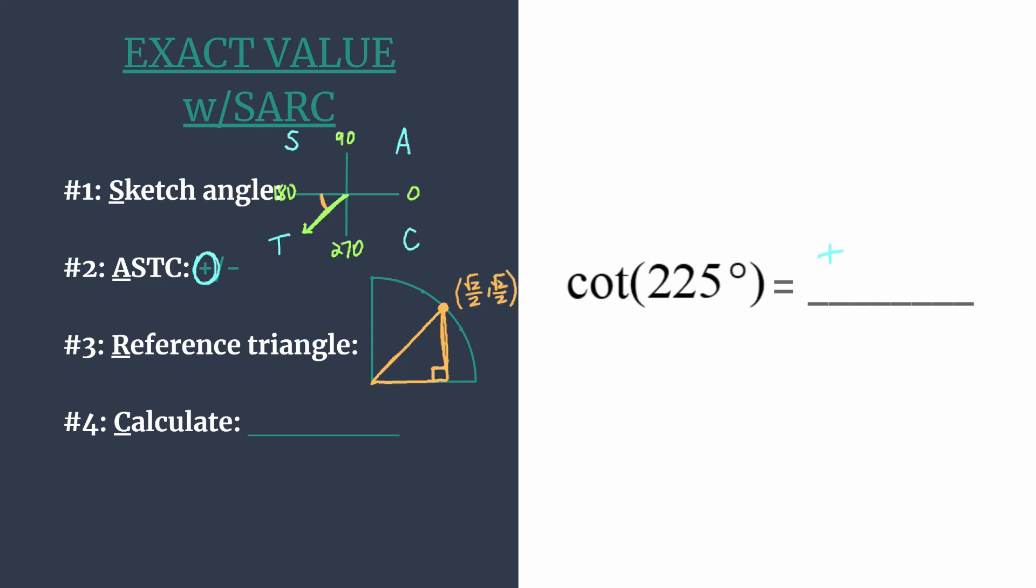All right we now have our coordinates and we can calculate our trig ratio. As a reminder, the cotangent of an angle in the unit circle is going to be the x divided by the y.